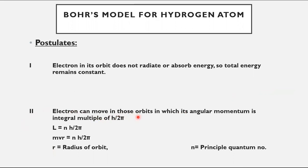Postulate 2: an electron can only move in those orbits in which its angular momentum is an integral multiple of h upon 2π. Electrons can jump between allowed orbits where angular momentum equals h/2π, 2h/2π, 3h/2π, 4h/2π, and so on. The formula is: angular momentum = nh/2π, or mvr = nh/2π, where n is the principal quantum number and r is the radius of the orbit.